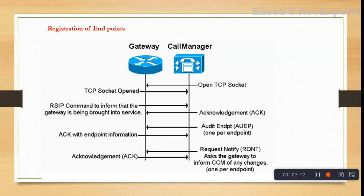Once registration starts, the gateway and the Call Manager open a TCP socket between them. This TCP handshake can be seen using 'debug ip tcp transaction'. After that, the voice gateway sends an RSIP — Restart In Progress — to the Call Manager. This message informs the Call Manager that the gateway is being brought into service or the endpoint is trying to register. All messages must be acknowledged by the other party.